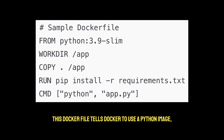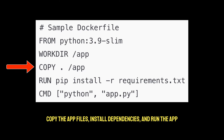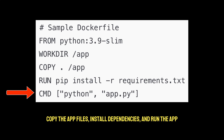This Dockerfile tells Docker to use a Python image, set up a working directory, copy the app files, install dependencies, and run the app.